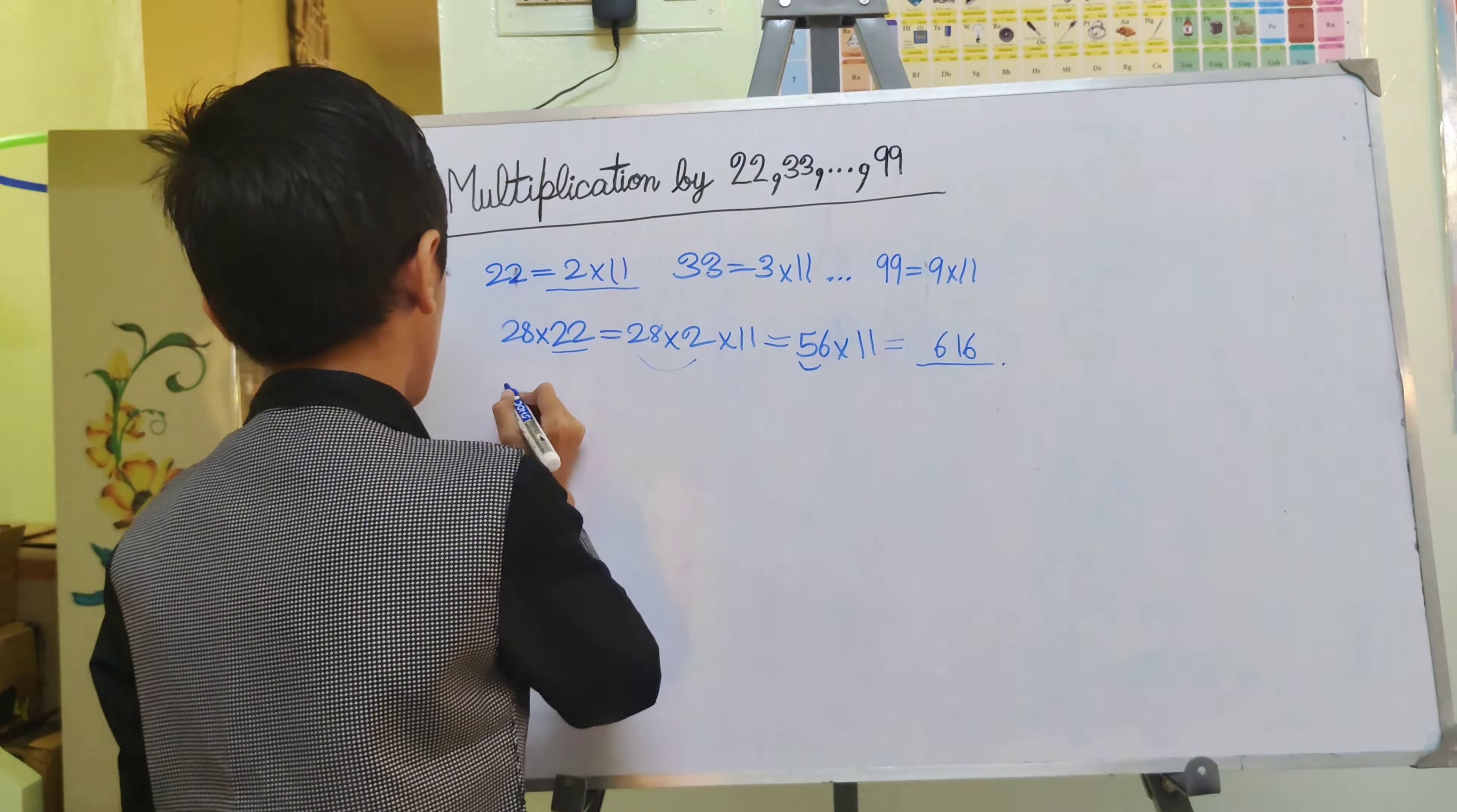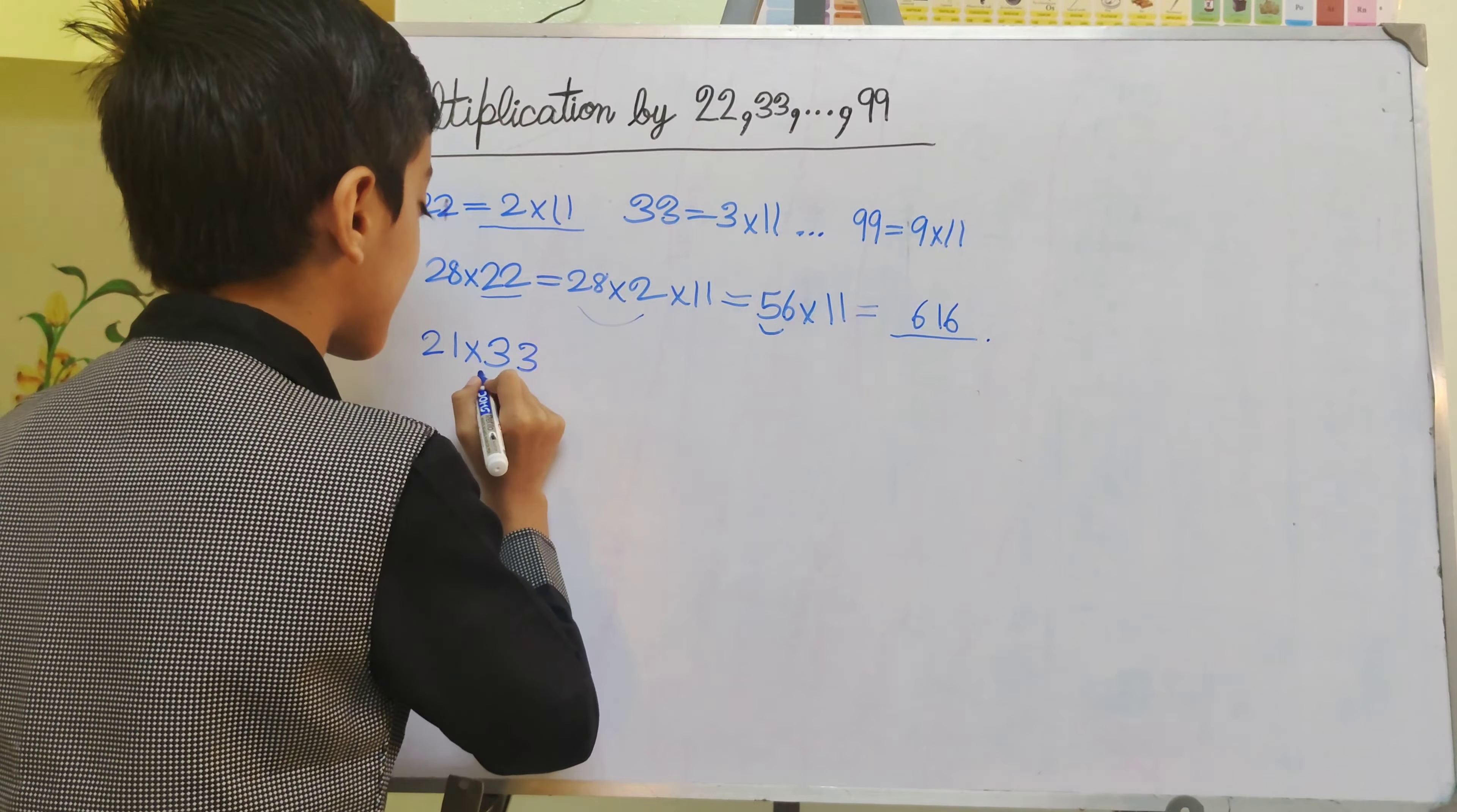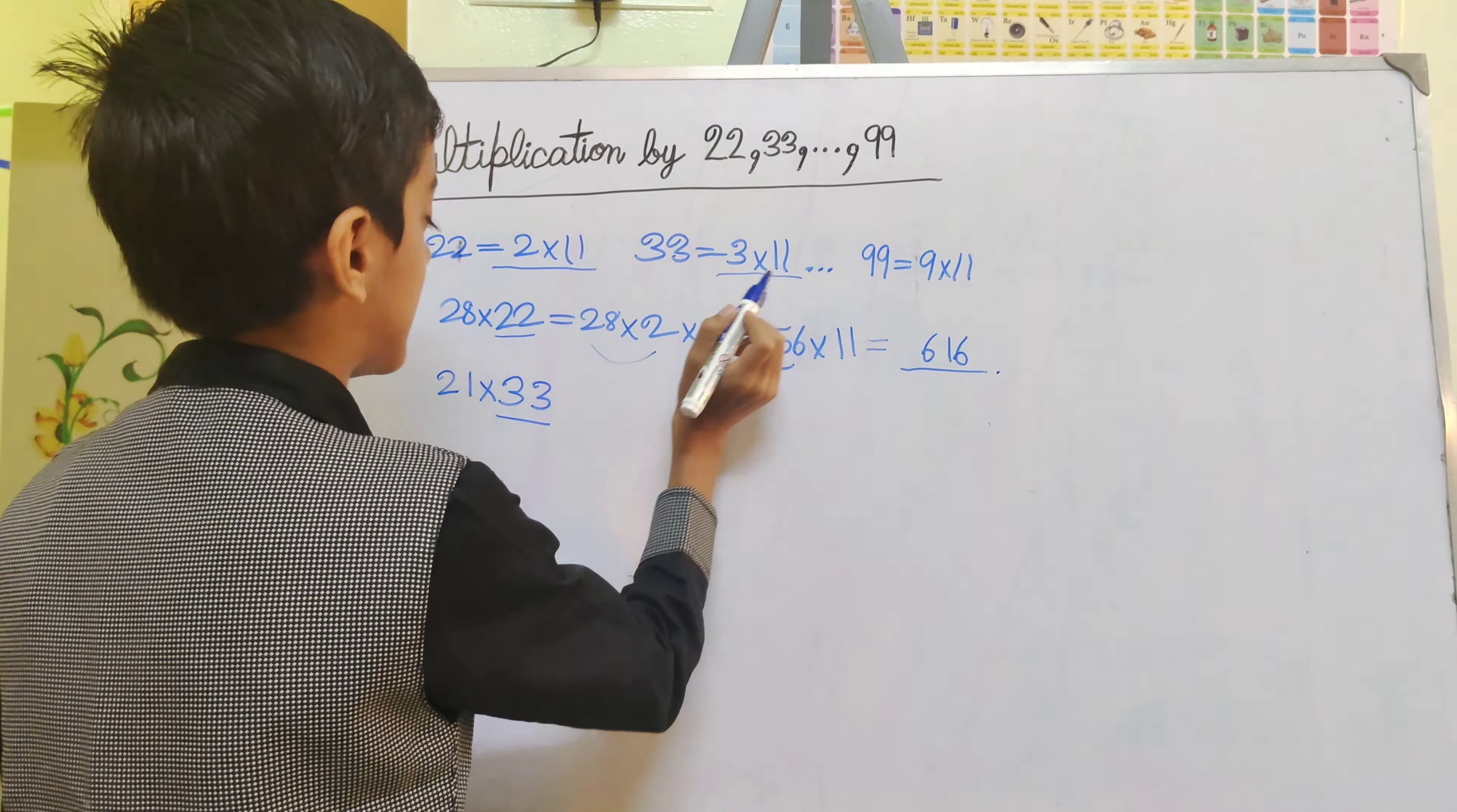Let's take one more example. So, 21 multiply 33. As we can write 33 as 3 multiply 11.